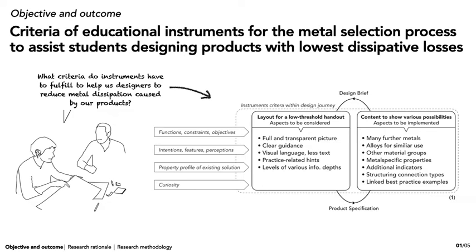I start with the objective and outcome. The project's objective was to discover what criteria educational instruments must fulfill to help designers reduce metal dissipation caused by their designed products. The criteria are ultimately aimed at design students. The derived criteria are allocated to a design and content level, as you can see.